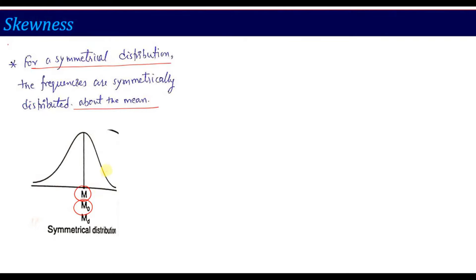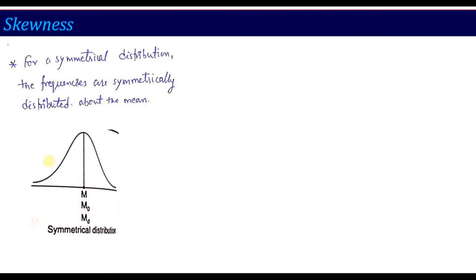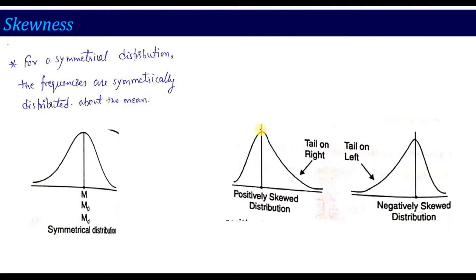But it is possible that your data series is not like a symmetric distribution. It might be that the left-hand side becomes more curved or the right-hand side has more frequency, so there will be some distortion in the symmetrical distribution. When this distortion is generated, we say there is skewness. If the right-hand side tail is longer, it is called a positively skewed distribution; if the left-hand side tail is longer, it is called a negatively skewed distribution.